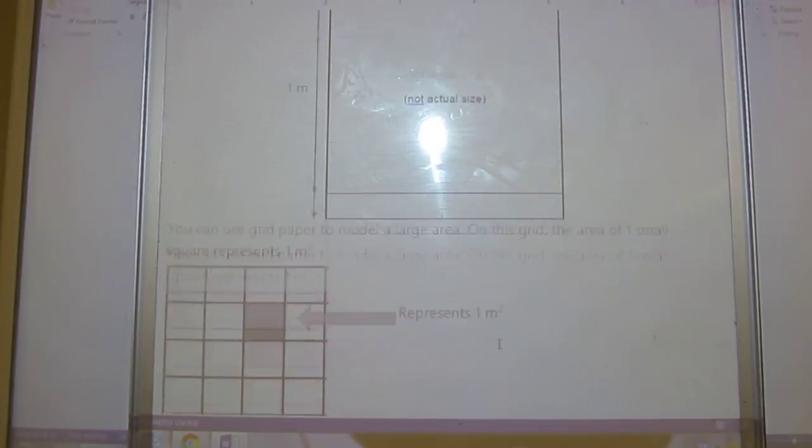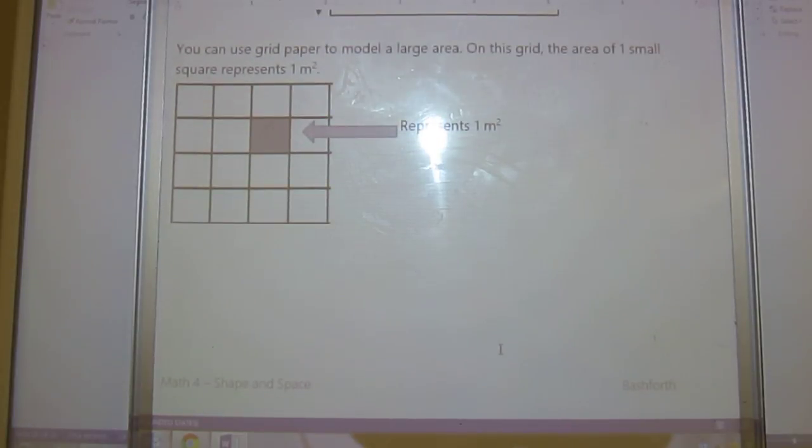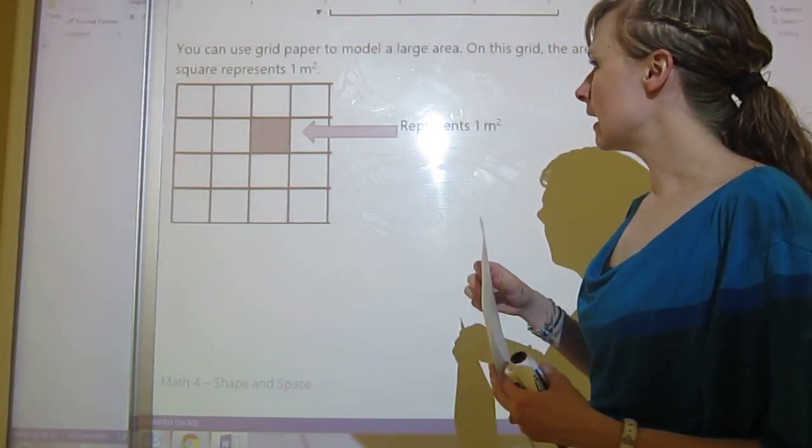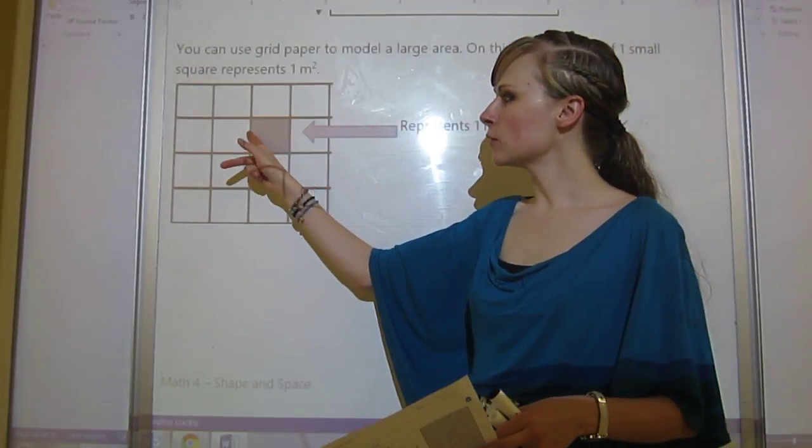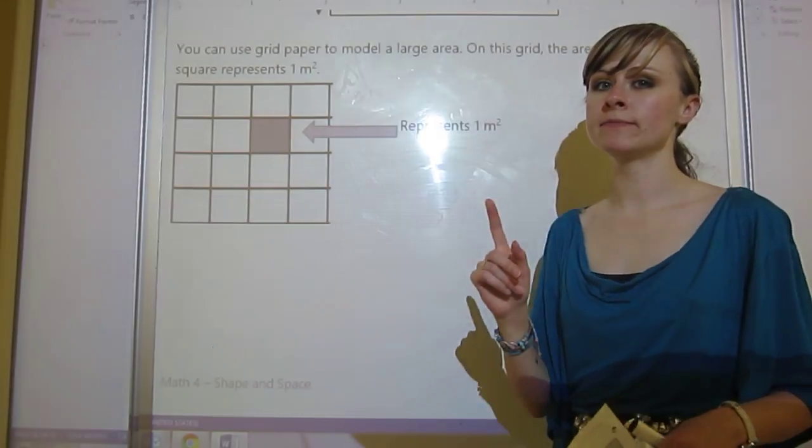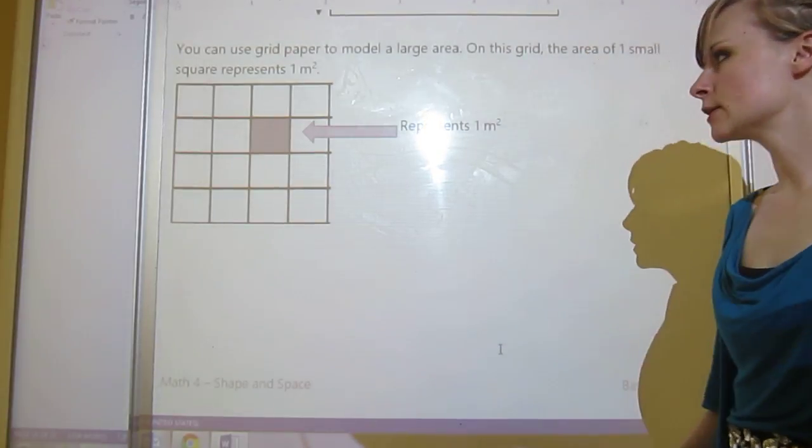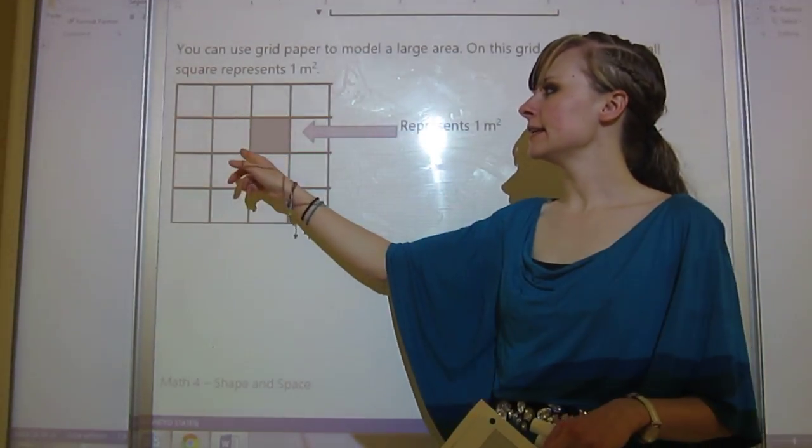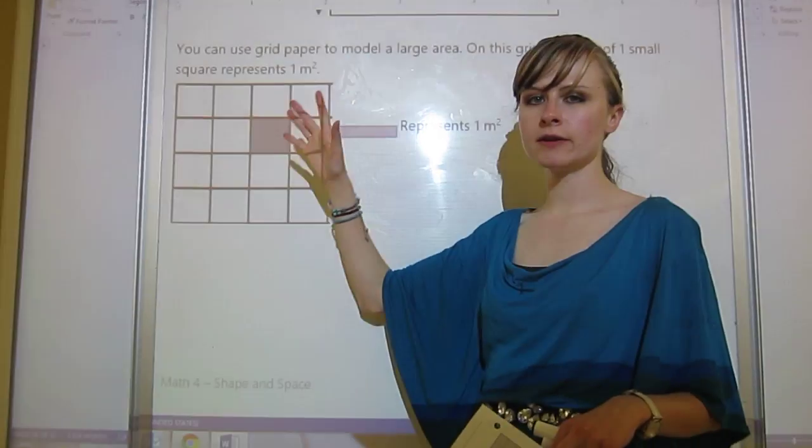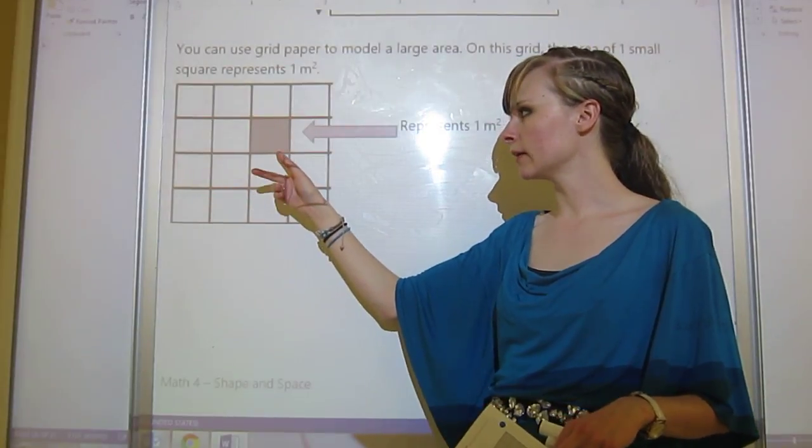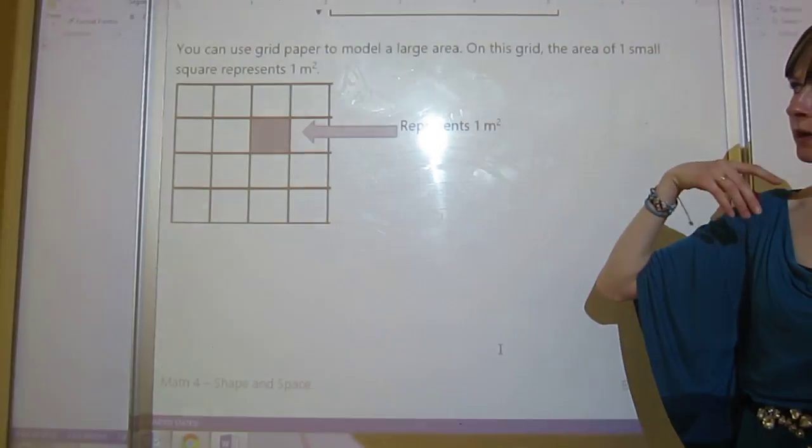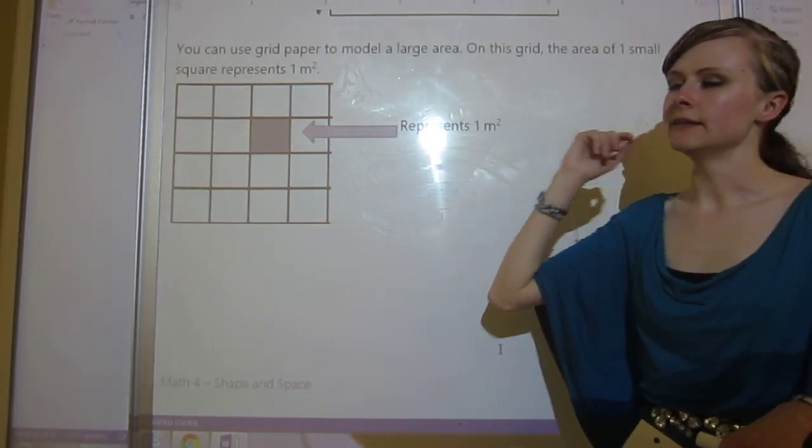The next thing we'll look at is because we need to use models, because papers are not big enough, we're going to make one square represent one meter, sort of like centimeters. But now we need to remember to change the units. So this is a grid, and in this grid we've made each one worth one meter squared.